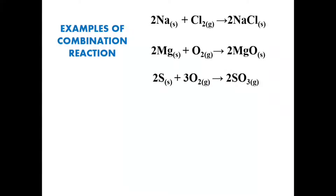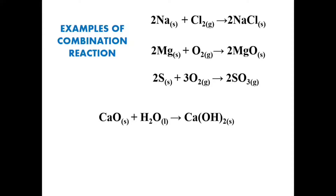Now let us see a few examples in which two compounds combine to form one single product. Calcium oxide + water → calcium hydroxide; CaO is a compound, H₂O is another compound, which combine to form Ca(OH)₂, that is calcium hydroxide. MgO + CO₂ → MgCO₃; magnesium oxide combining with carbon dioxide to give magnesium carbonate.